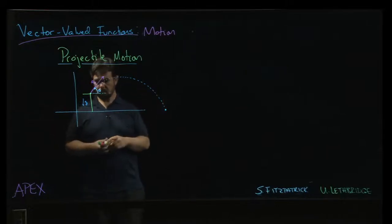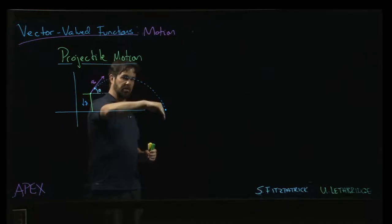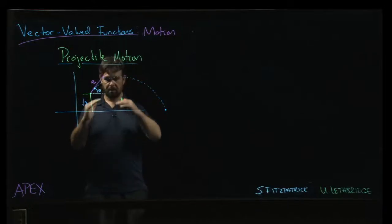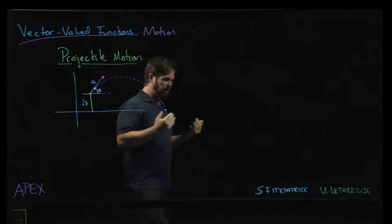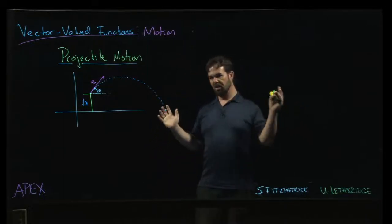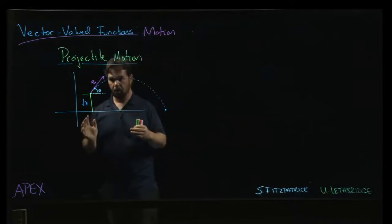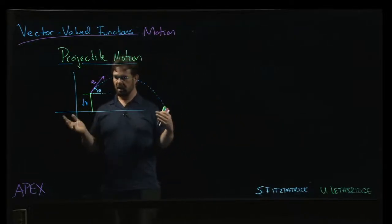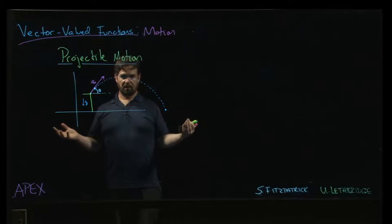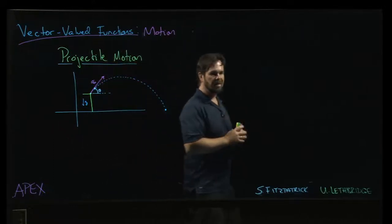We have gravity acting downward - that's why we have the parabolic trajectory here. We have gravity pulling things down. We are not accounting for air resistance, wind resistance, anything like that. Things get a lot more complicated if you bring in those kinds of considerations.